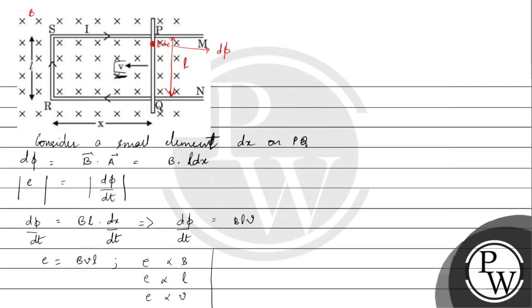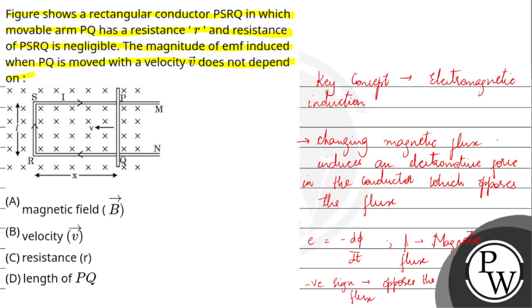Therefore, now we can go back to the question and mark the correct option. The magnitude of EMF induced when PQ is moved with velocity v does not depend on resistance r. The correct answer to this question is option C. Hope you have understood it well. Best of luck.